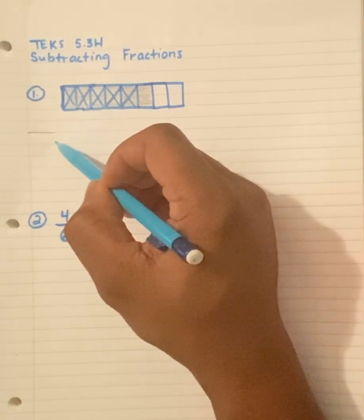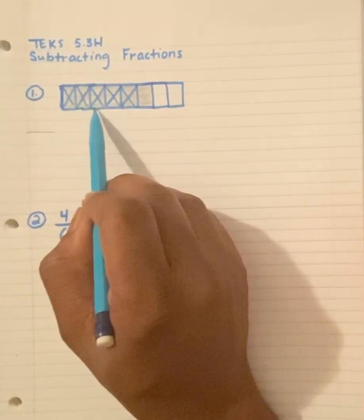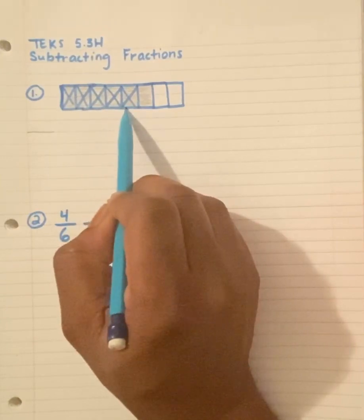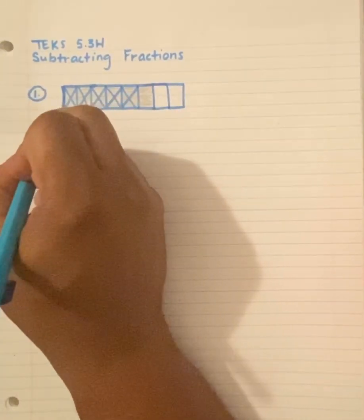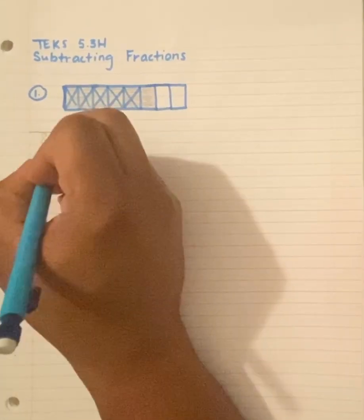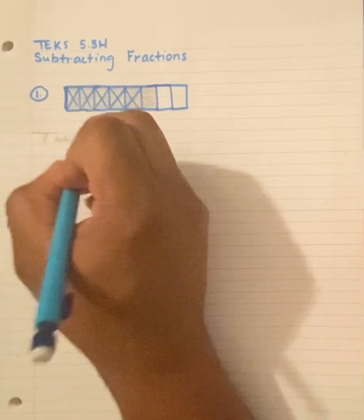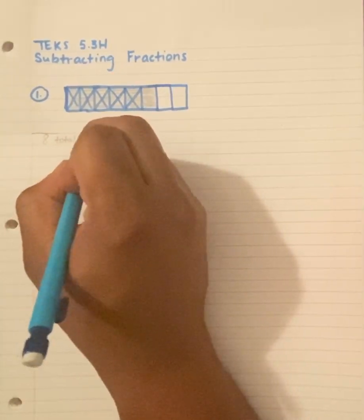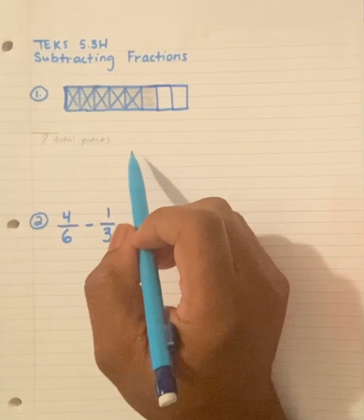How many total squares or total pieces do we see? 1, 2, 3, 4, 5, 6, 7, 8. So 8 is my denominator because it represents my total pieces. So it's 8.